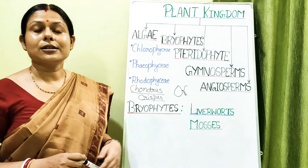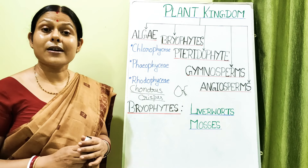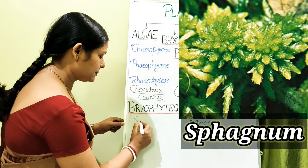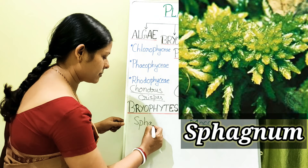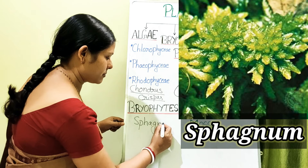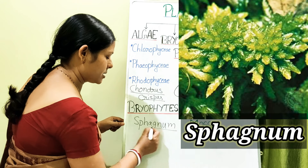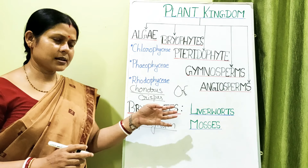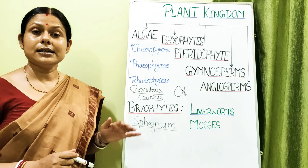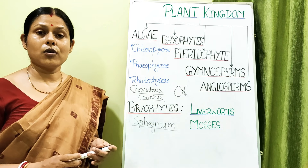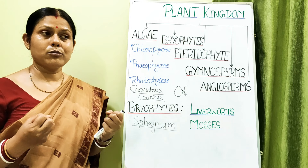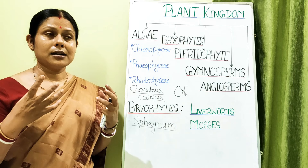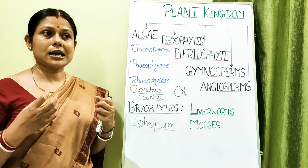Another important economic use of bryophytes involves a moss called Sphagnum. Sphagnum has the property of absorbing atmospheric moisture within it and can be used as packing material for shipment of live plant stock from one place to another. Since sea shipping takes many days, Sphagnum can hold moisture for a long period, eliminating the need for regular watering.